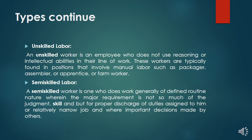Number one: unskilled labor. An unskilled worker is an employee who does not use reasoning or intellectual abilities in their line of work. These workers are typically found in positions that involve manual labor, such as packager, assembler, apprentice, or farm worker. Number two: semi-skilled labor. A semi-skilled worker is one who does work generally of a defined routine nature.